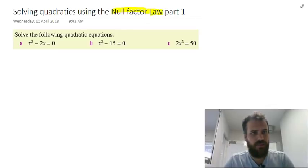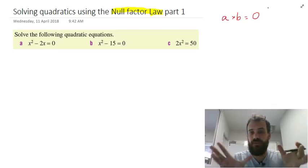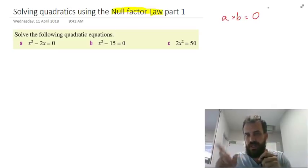If I tell you that there are two numbers, a times b, and the answer is equal to zero, so something times something equals zero, you can probably tell me one of two things straight away. You can either tell me that a must be equal to zero or b must be equal to zero.